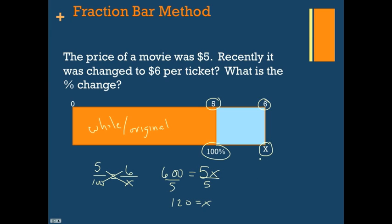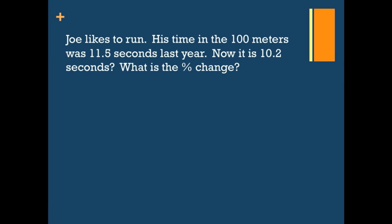We can then divide by 5, and that gives us 120 equals x. That means our new percent is 120%. Now we're not looking for the new percent, we're looking for the change. If it started at 100 and it's now gone up to 120, we have an increase of 20%. And realize I just got the 20 by taking 120 minus 100. It's changed from 100 to 120, so it's increased by 20%.